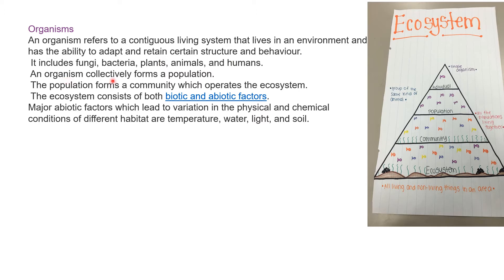An organism collectively forms a population. Individually, each individual forms an organism. When many individuals come together, they form a population — so here there is one fish, and in population there are groups of fish. Population then forms a community which operates the ecosystem — so along with this fish, comes the water, grass and all the living organisms which are present, and this forms a community.